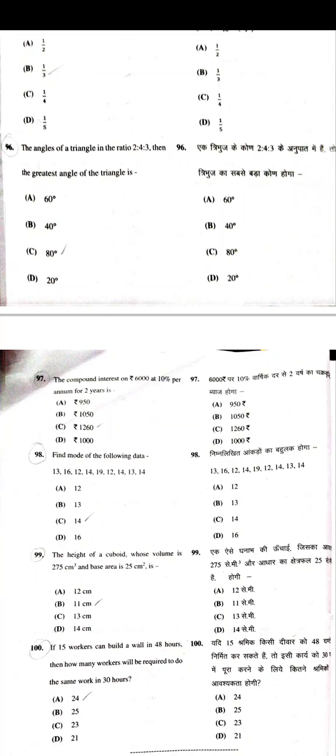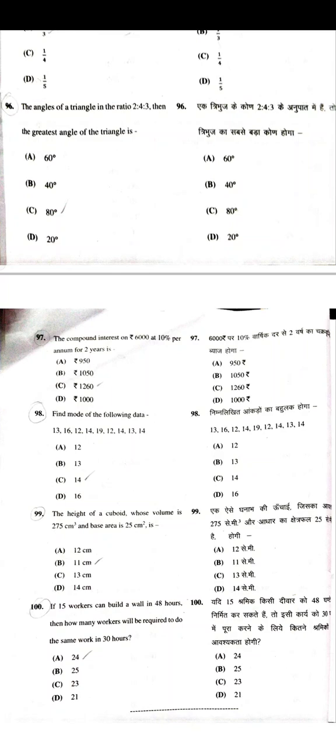Value of the following expression will be 1/3. The angles of a triangle are in ratio 2:4:3 — the greatest angle is 80°. The compound interest on ₹6000 at 10% per annum for 2 years is ₹1260. Find the mode of the following data — that will be 14. The height of a cuboid whose volume is 275 cm³ and base area is 25 cm² is 11 cm. If 5 workers can build a wall in 48 hours, then workers required to do the same work in 30 hours is 24.